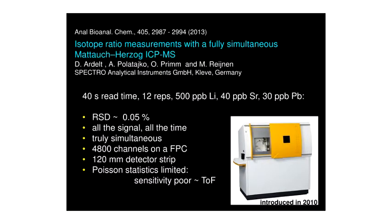This instrument is based on a focal plane camera that has 4,800 Faraday detector channels. It's relatively big — 12 centimeters in length — and therefore it can cover the full mass spectrum of the Mattock-Herzog geometry. It provides sensitivity approximately equal to a TOF, but with improved relative standard deviation on isotope ratio precision.